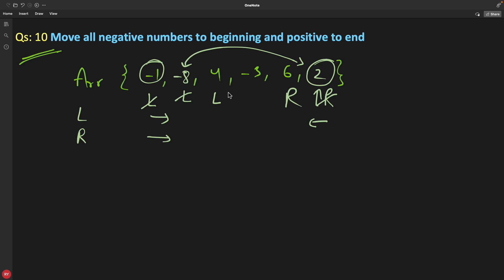Now see, is this guy at correct position? No, your L should be pointing at a negative value, but this is positive value. R is fine, this is positive value, this is fine. But you will not swap positive with positive, right? Then what you have to do? You have to decrement R.